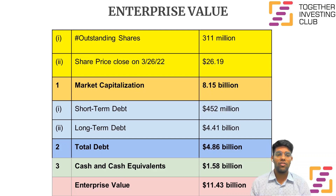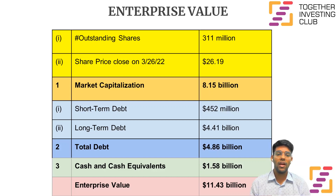The enterprise value — which is market cap plus total debt minus cash and cash equivalents — comes out to be $8.15 billion plus $4.86 billion minus $1.58 billion, that is equivalent to $11.43 billion.